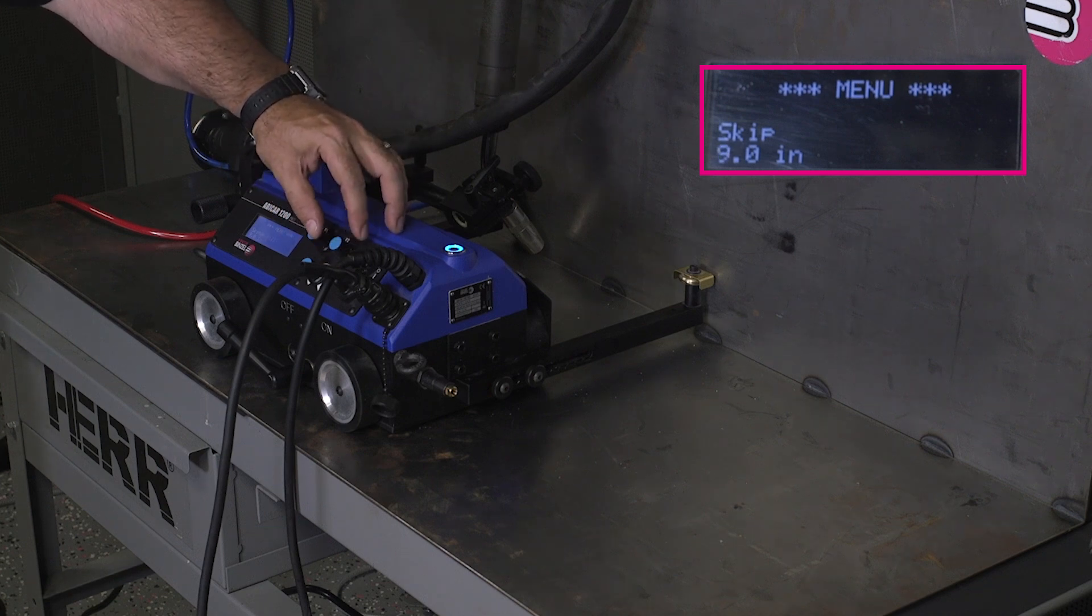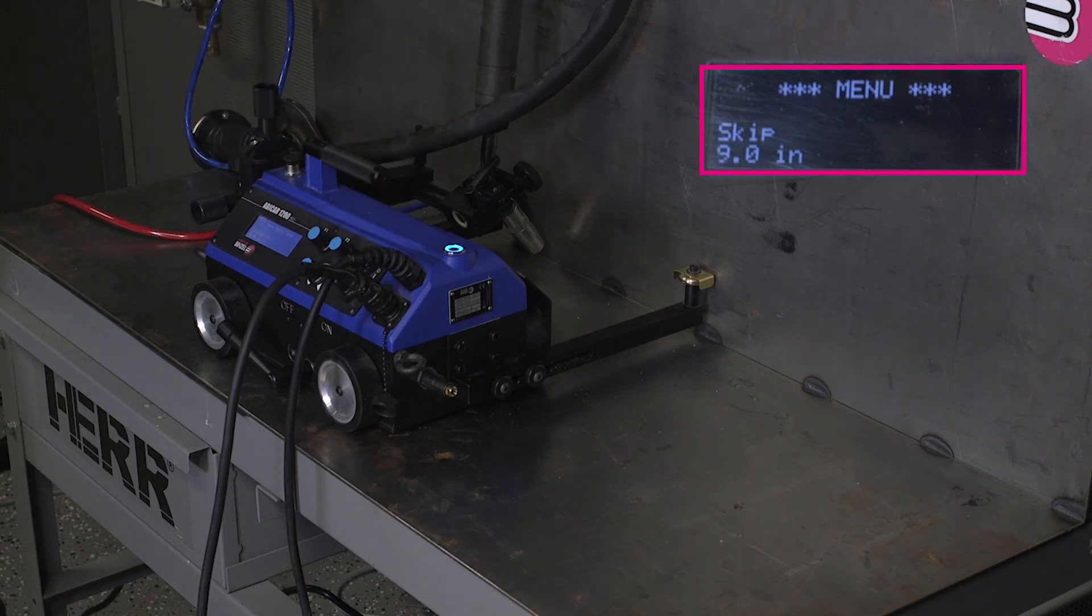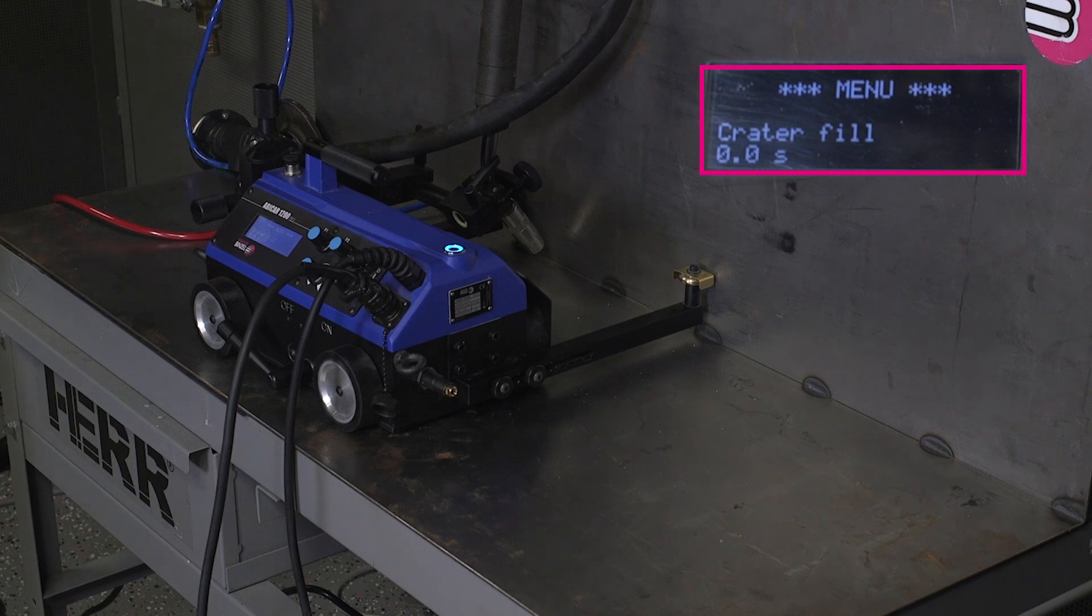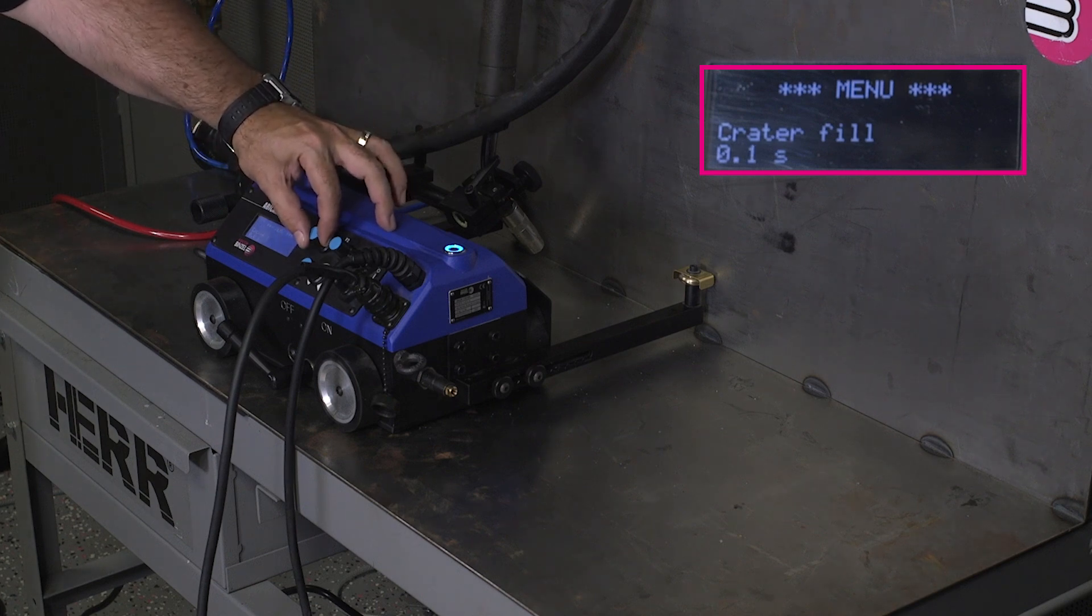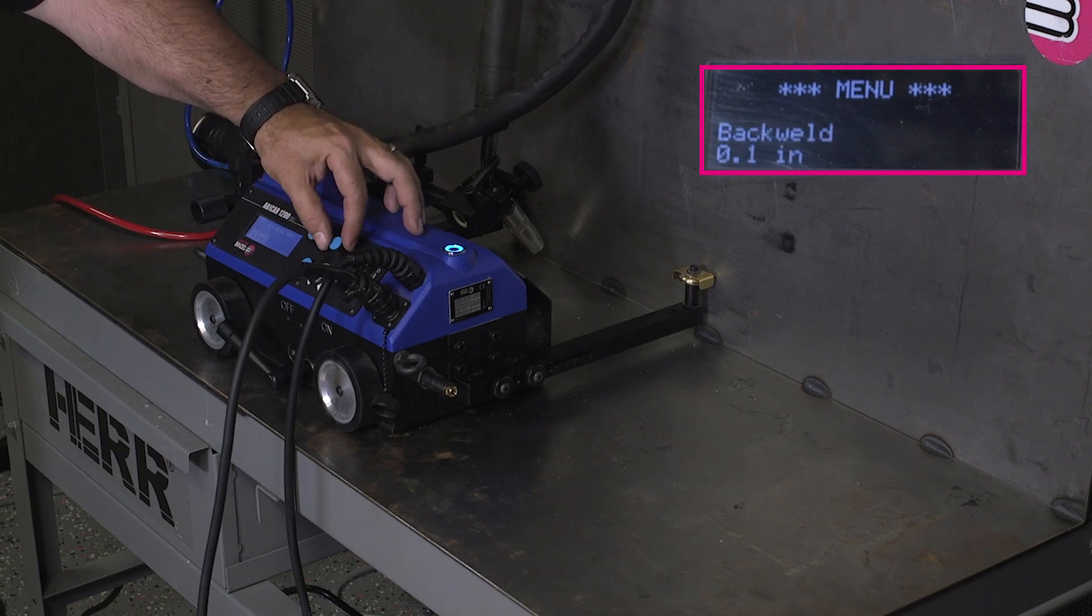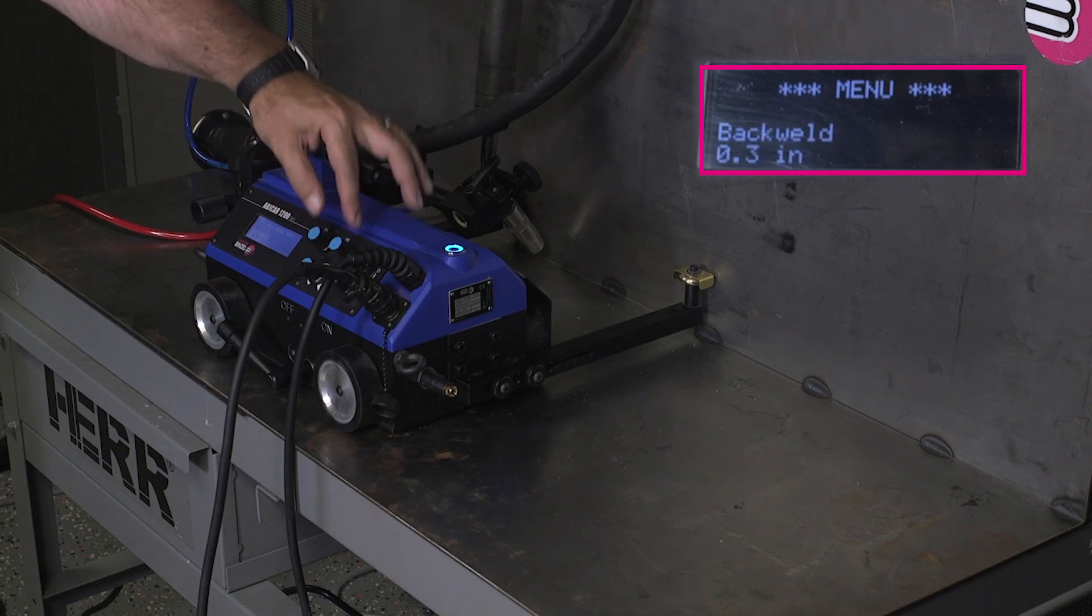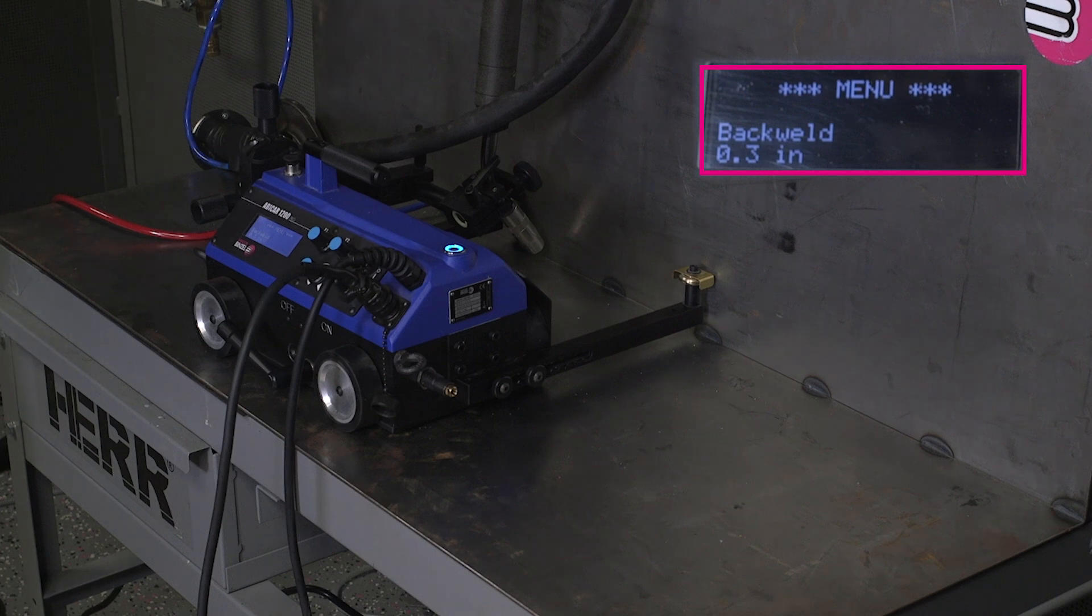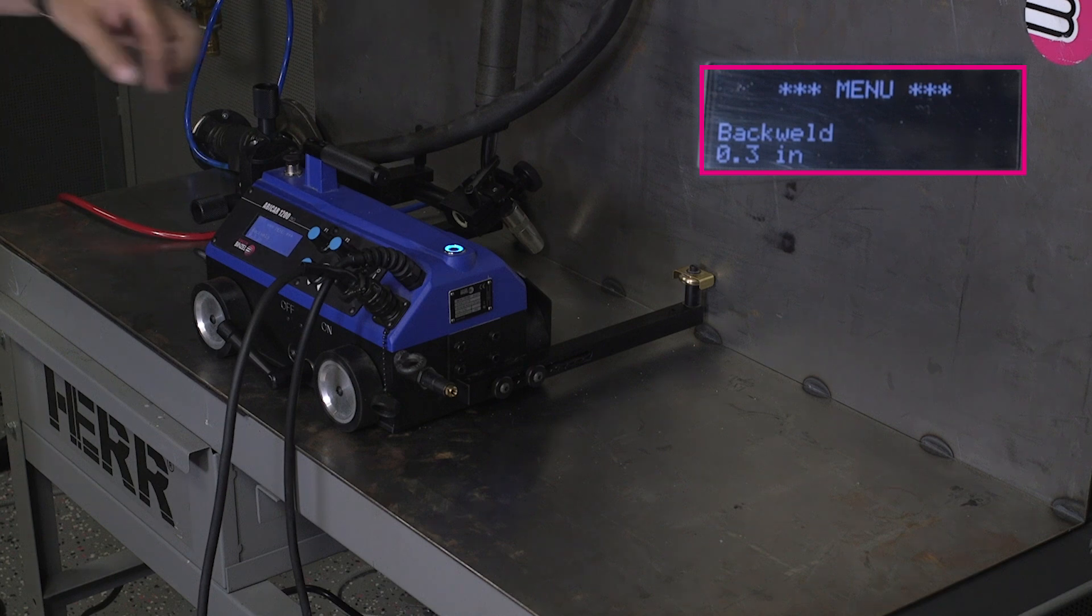Now this time we're going to actually add a little bit of a crater fill. At the end of the weld, we want it to stop for two tenths of a second. And we want to back weld three tenths of an inch. So at the end of the three inches, it's going to back step three tenths of an inch and stop for two tenths of a second.